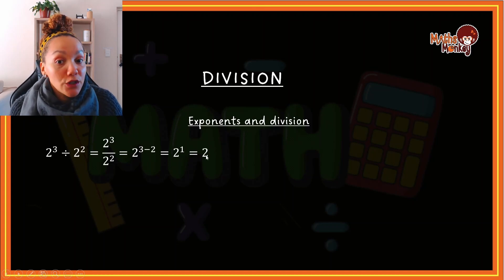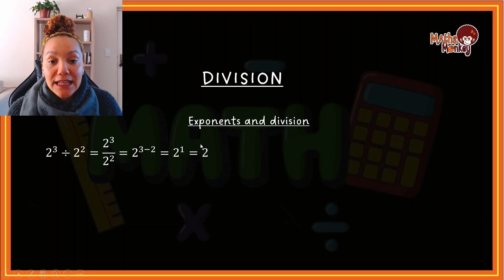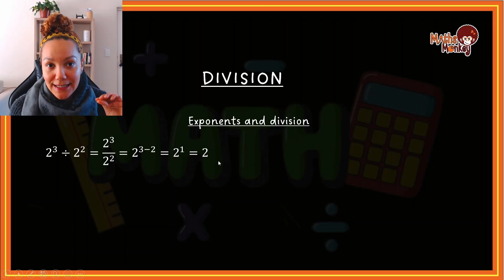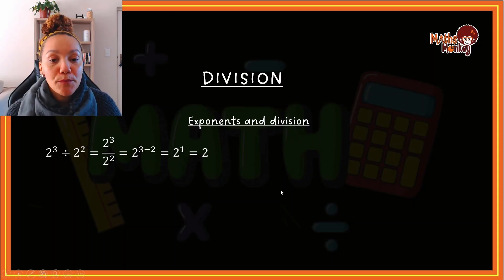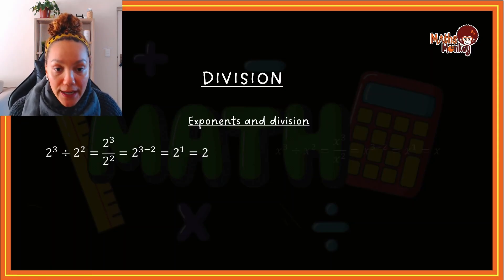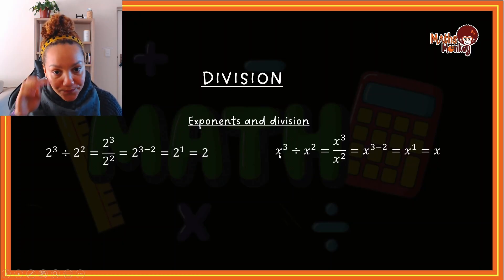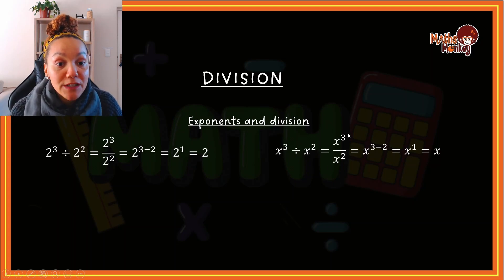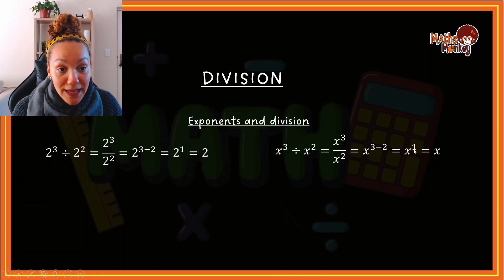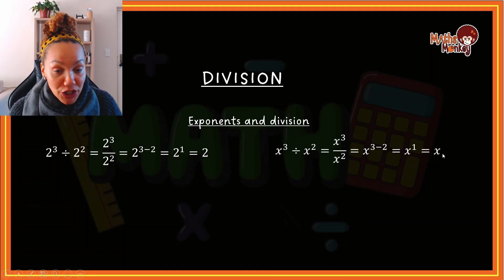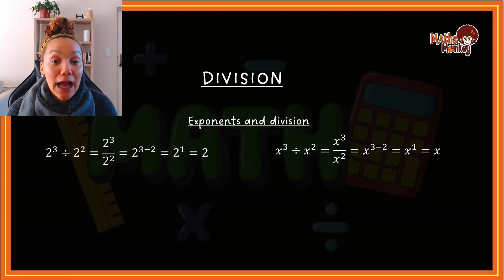Anything to the power of one remains the same, so two to the power of one is just two. Any number that you see expressed as is actually has an invisible power of one. Moving this to variables: x to the power of three divided by x to the power of two. You subtract the powers — five minus two gives x to the power of one, which is just x.